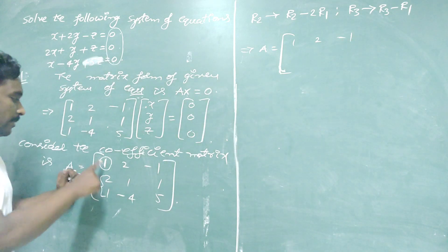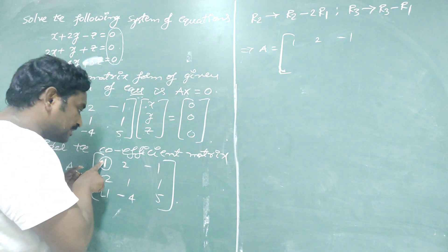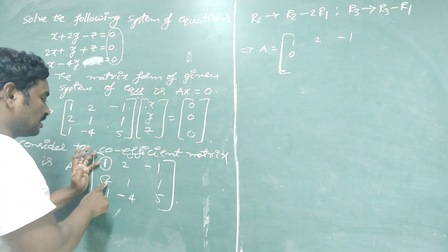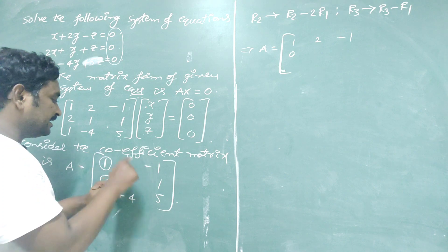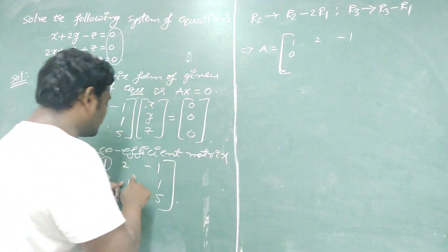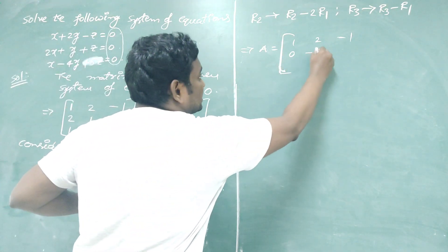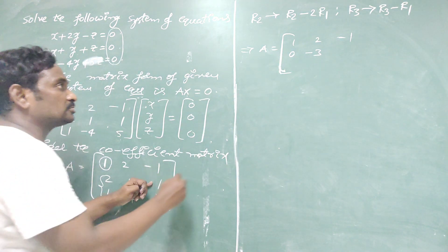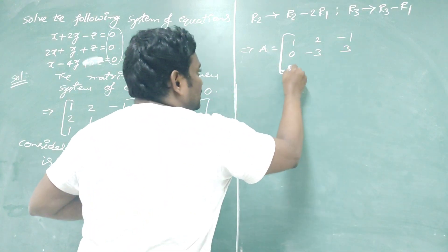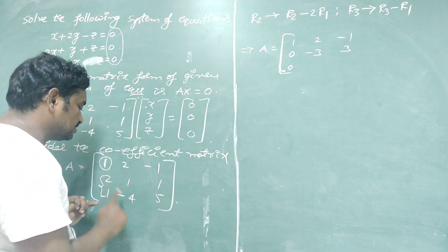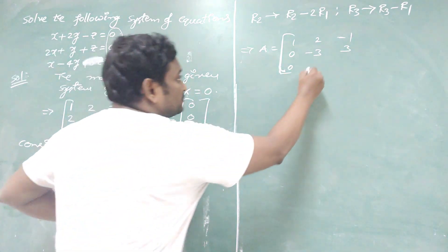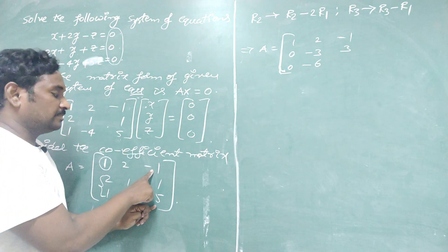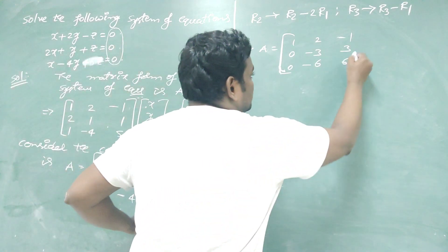For R2 minus 2R1: 2 minus 2 = 0; 1 minus 4 = minus 3; 1 minus (minus 1 times 2) = 1 plus 2 = 3. For R3 minus R1: 1 minus 1 = 0; minus 4 minus 2 = minus 6; 5 minus (minus 1) = 5 plus 1 = 6. So the matrix now has second row 0, minus 3, 3 and third row 0, minus 6, 6.